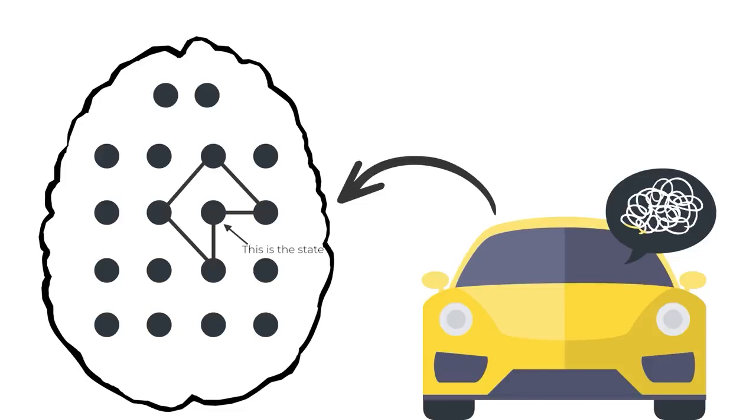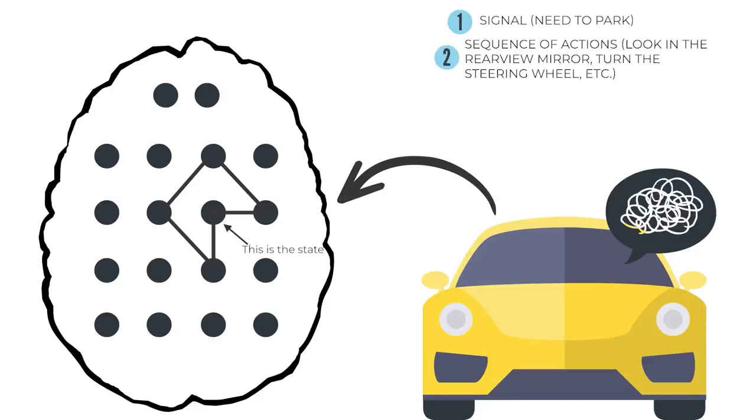A habit has four stages. First, the signal is a trigger that puts you in a zombified state. Secondly, the sequence of actions is your usual order of actions. Thirdly, reward. Habits arise and persist only because we get a little bit of pleasure from them as a reward. Therefore, you should always reward yourself for any unpleasant activity. And fourth, faith. You have to believe that by doing this, you will achieve something, otherwise it will seem pointless to you.